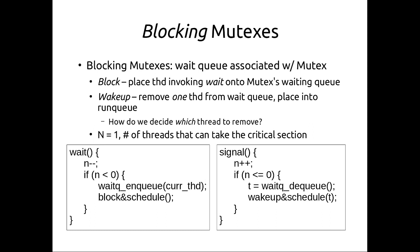Let's dive into blocking or sleeping mutexes. How do we block? Blocking is associated with blocking APIs — we put ourselves into a block queue or wait queue, take ourselves out of the running state, and call the scheduler to allow it to run somebody else. Every mutex has a blocked queue or wait queue associated with it. When we want to enter a critical section held by another thread, we get put onto that wait queue, remove ourselves from the run queue, put ourselves into a sleeping state, and allow the scheduler to run somebody else.